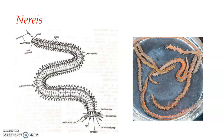Nereis are cosmopolitan marine polychaetes with worldwide distribution. They are usually found on sandy shores between the tide marks. Most of the time they live in burrows, which they form with the help of their setae. The burrow is usually U-shaped and coated with mucus, which binds together the fine particles of sand. Nereis maintains a constant water current through the burrow by undulations of its body.